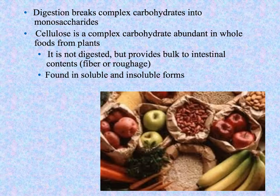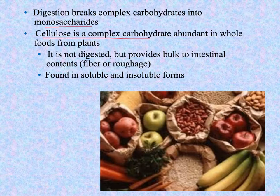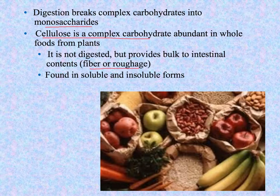In digestion, we break these complex carbohydrates down into monosaccharides, and then the monosaccharides are what are absorbed. Cellulose is another type of complex carbohydrate, but we're not able to digest it. The bacteria in our large intestine can break it down a little bit, but it basically serves as fiber, which is also sometimes called roughage. It provides bulk — just takes up space as the food moves through the digestive system and helps move the waste products through.